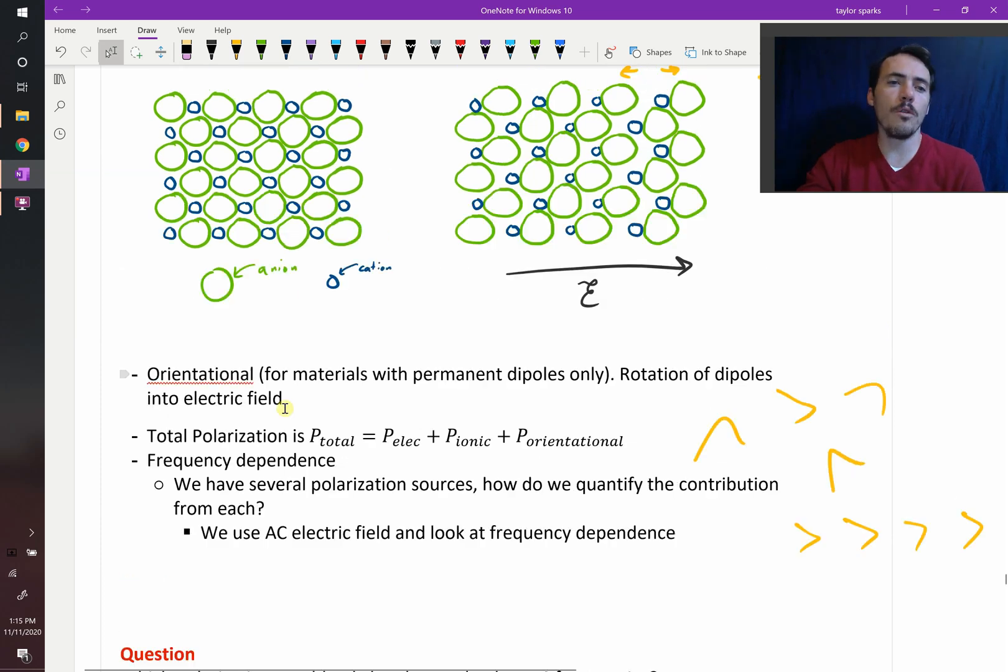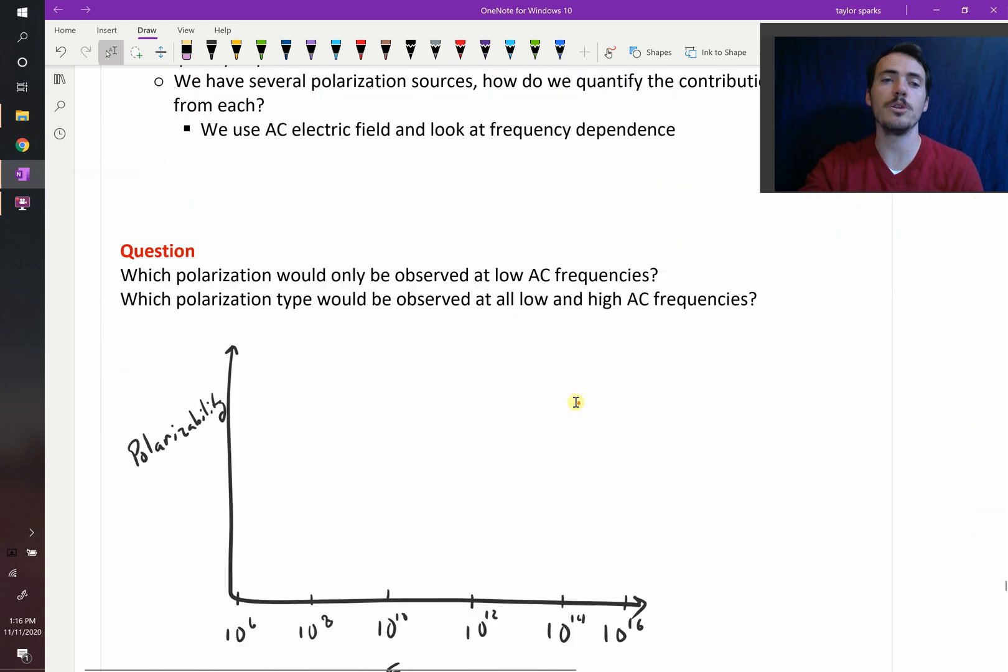And so the overall polarization that you'll see will actually be all these things added up. You're going to get a contribution from the electrons, a contribution from your ions, a contribution from orientation. All these things together will add to it. And what's interesting is that you can actually suss out the exact contribution from each type. If you want to know how much is electronic, and how much is ionic, and how much is orientational, you can figure that out. And how you do it is with a frequency dependence test.